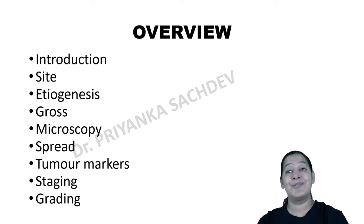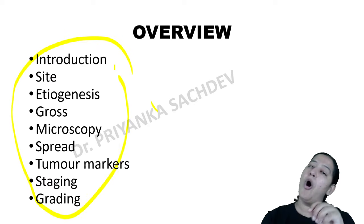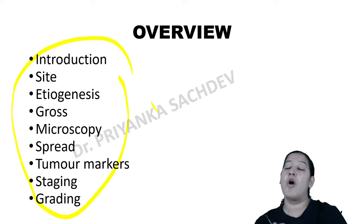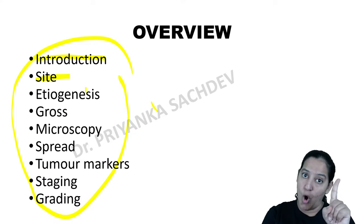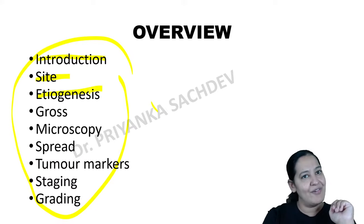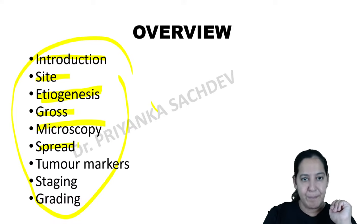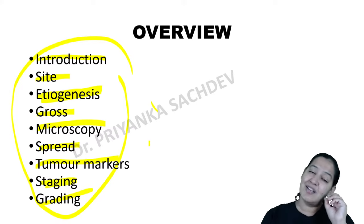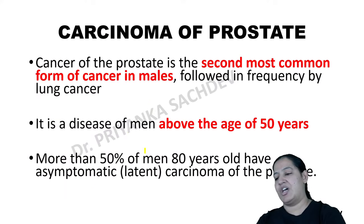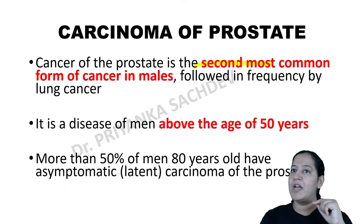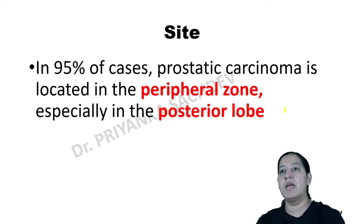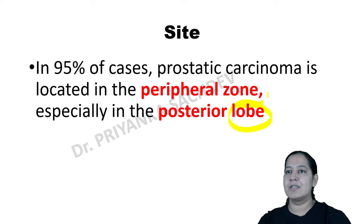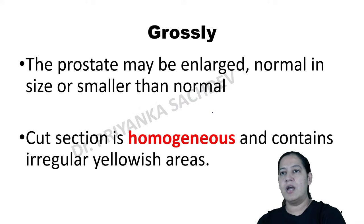Prostatic carcinoma is a malignant tumor — more important. These are the standard headings: introduction, site, risk factors, etiopathogenesis, gross, microscopy, spread, tumor markers, staging, and grading. Introduction: it is the second most common tumor in males worldwide, after lung cancer. Age is more than 50 years, similar to BPH. Site: posterior lobe, peripheral zone — both PP. Posterior lobe among lobes, peripheral zone among zones.